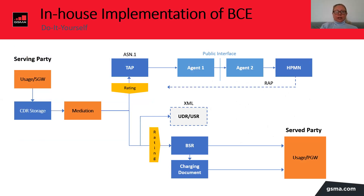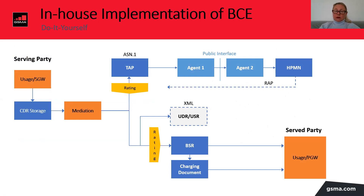How do you go about implementing yourself in-house? As the serving party, you generate usage, run it through mediation where you distinguish what goes into TAP — create TAP as usual, send it to your agent, who then sends it to another agent and to the HPMN. There's a second stream of data after mediation which goes into BCE based on maybe IMEI ranges, APNs, or RAT types. That data is packaged into BCE reports — UDR, USR if required and agreed. You would also need to generate a billing statement report, apply rating to it, and send it to your partner for reconciliation.